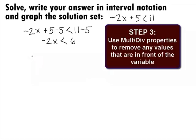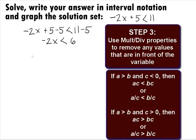In Step 3, we want to use the multiplication or division property for inequality. A reminder that if we are multiplying or dividing both sides of the inequality by a negative number, the inequality needs to change. If we are multiplying or dividing both sides by a positive value, the inequality stays the same.